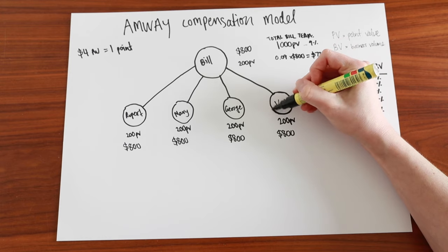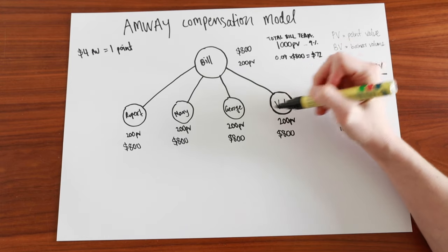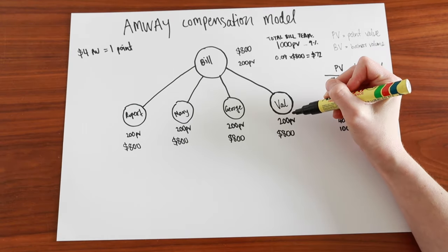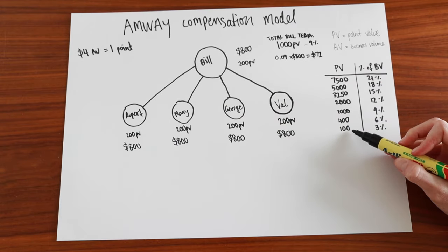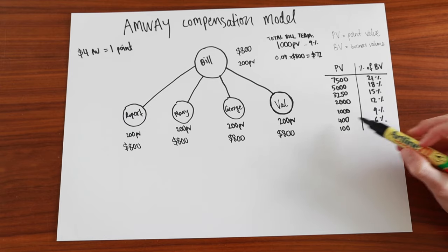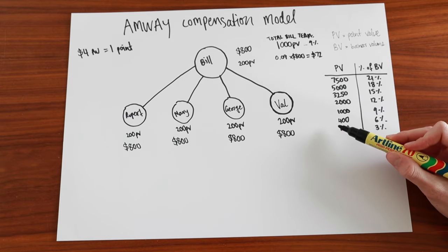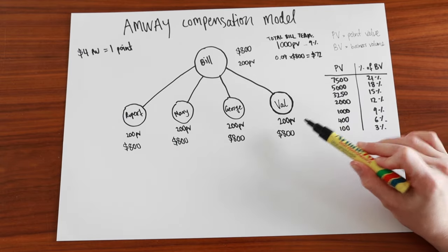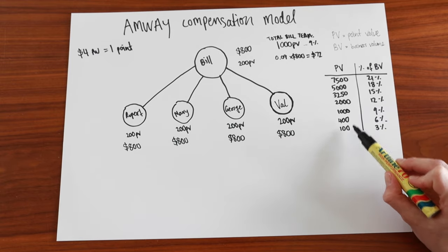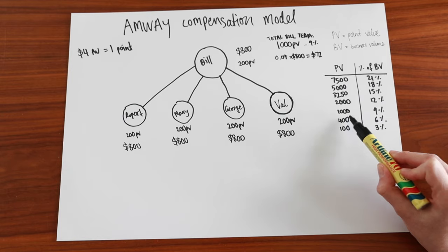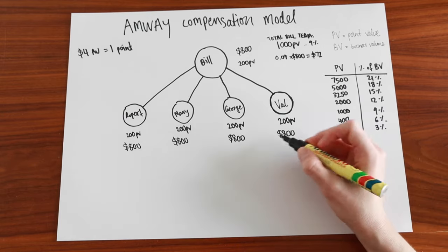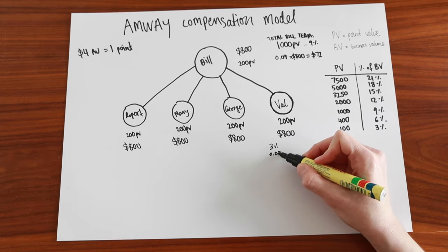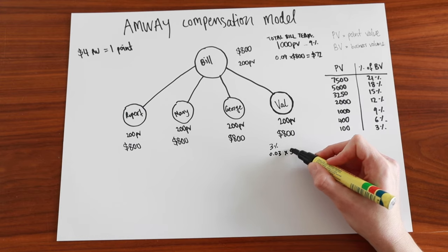And then Bill will get a percentage of what his team members are getting back. So each of Bill's team members are spending 200 PV, so they qualify for 3% back. It's either 100 or if they're up to 400, then they'll get 6% back. There's nothing in between. So even though their point value is 200 PV, they qualify for 100, not quite 400 yet. So they get 3% back. So 0.03 times 800, they get $24 per month back from what they spend.